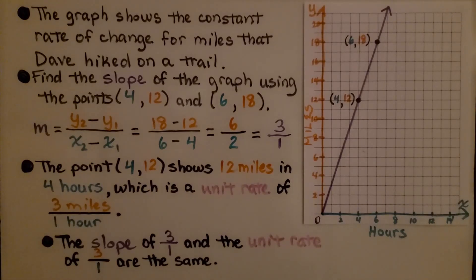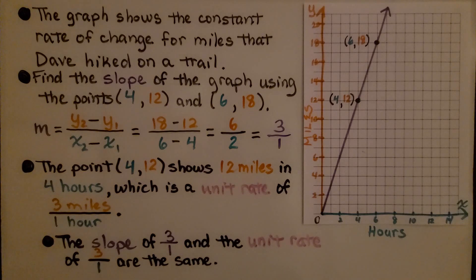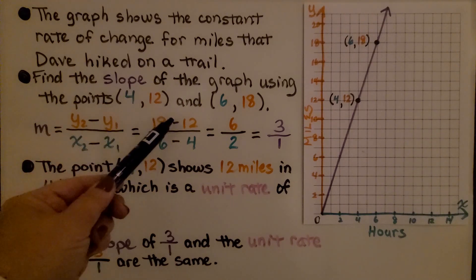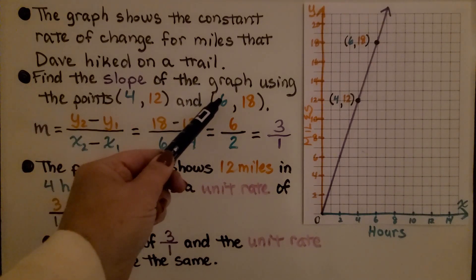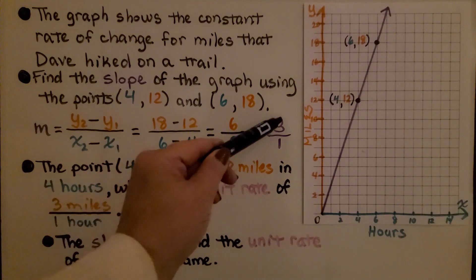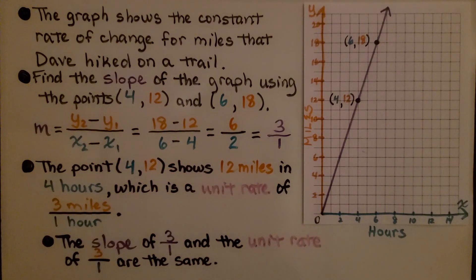The graph shows the constant rate of change for miles that Dave hiked on a trail. Find the slope using the points (4, 12) and (6, 18). The second y-value is 18 minus the first y-value 12, giving us 6. The second x-value is 6 minus the first x-value 4, giving us 2. So we have 6 over 2, which simplifies to 3 over 1. The point (4, 12) shows 12 miles in 4 hours, which is a unit rate of 3 miles in 1 hour. The slope of 3 over 1 and the unit rate of 3 over 1 are the same.